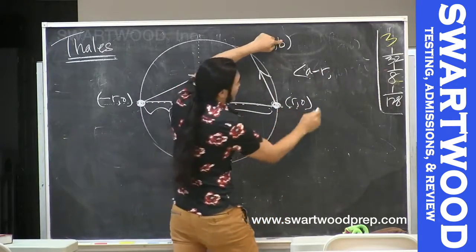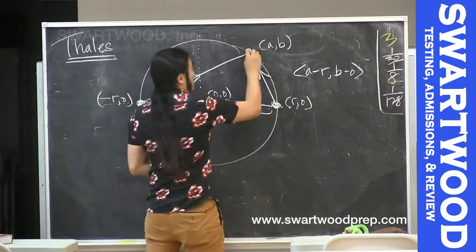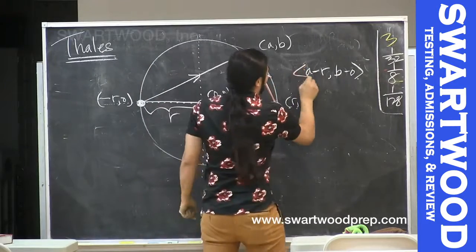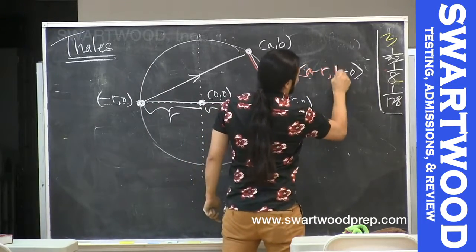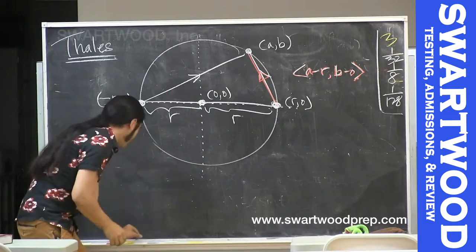This vector here, what's it going to be? Where you end up minus where you started, so A minus R. And then this guy is going to be B minus zero. So that's our vector here.